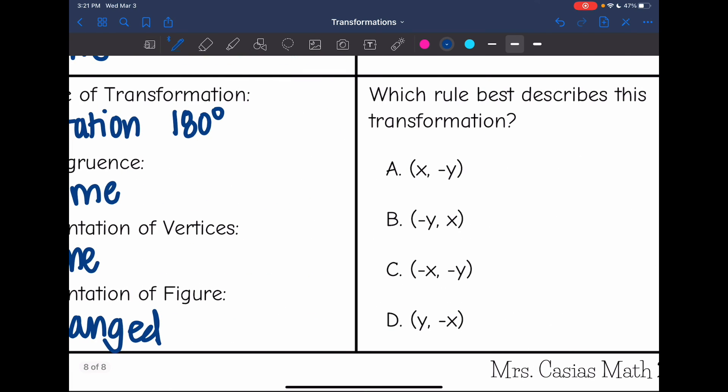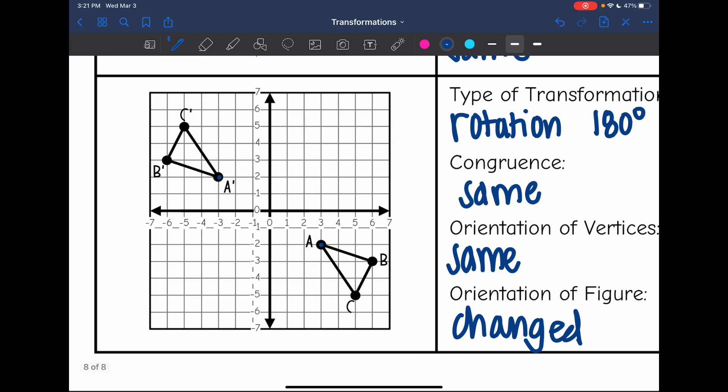Okay, now I'm going to see if I can identify the rule. So I'm going to write down A and A prime. So A is at (3, -2). And A prime is at (-3, 2).